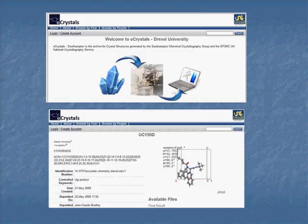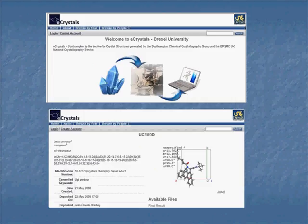Another way that we're disseminating information, we have the CIF files from our X-ray crystallography. Now Drexel has a site of e-crystals which is freely available.